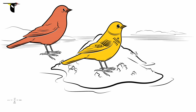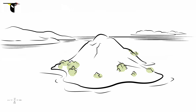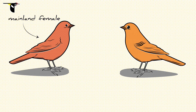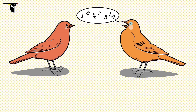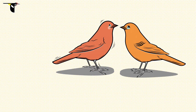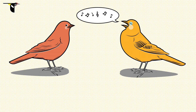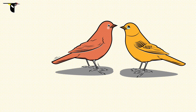But at what point are we confident that this island population has really changed enough to become a new species? Well, let's put our definition to the test. If we introduce a female from the mainland species to a potential mate from the island after 200 generations in isolation — about 400 years in bird terms — will they mate? It appears that these two still recognize each other as members of the same species. How about after another 1,000 generations of isolation? The female finds this island male's song a bit strange, but she still chooses to mate with him.